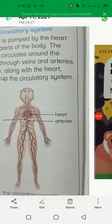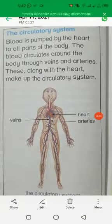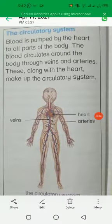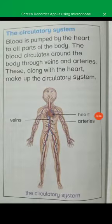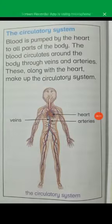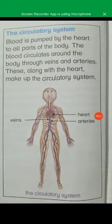Dear students, now we will read about the circulatory system. Blood is pumped by the heart to all parts of the body. The blood circulates around the body through veins and arteries. These, along with the heart, make up the circulatory system.